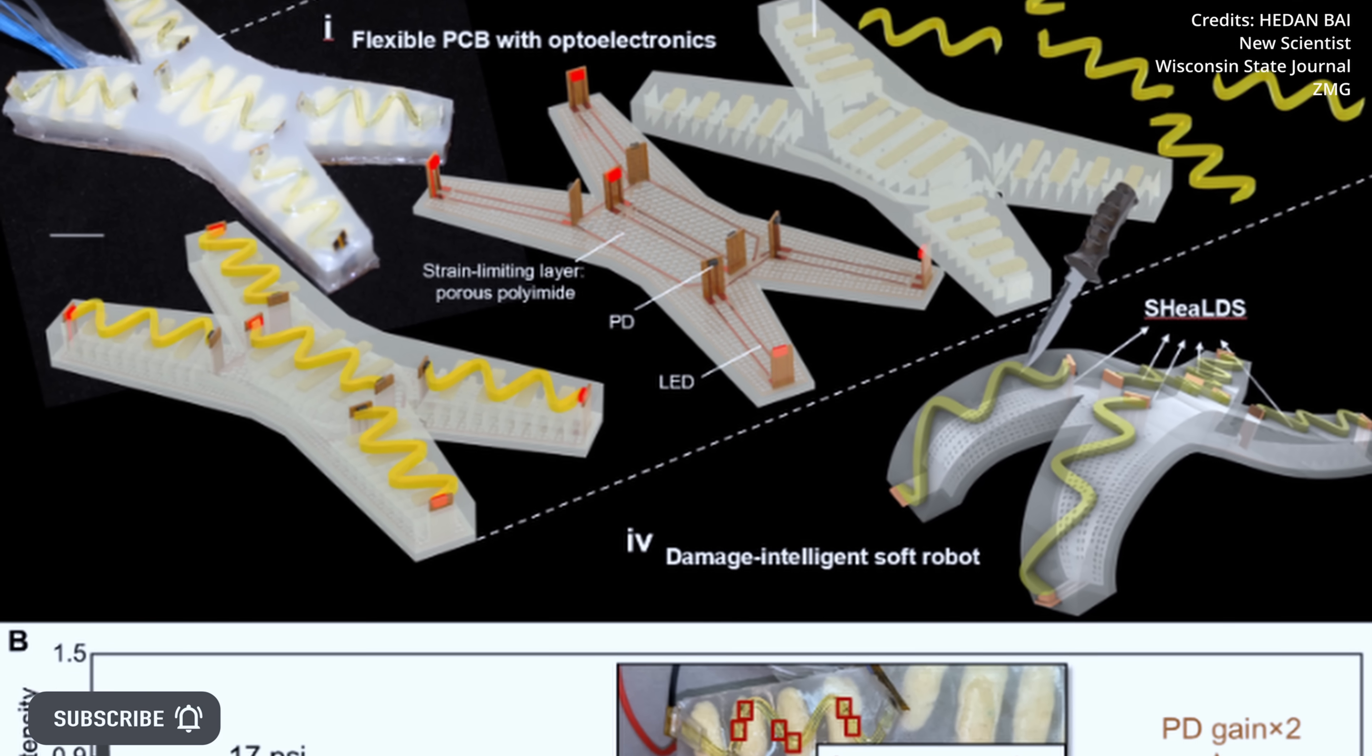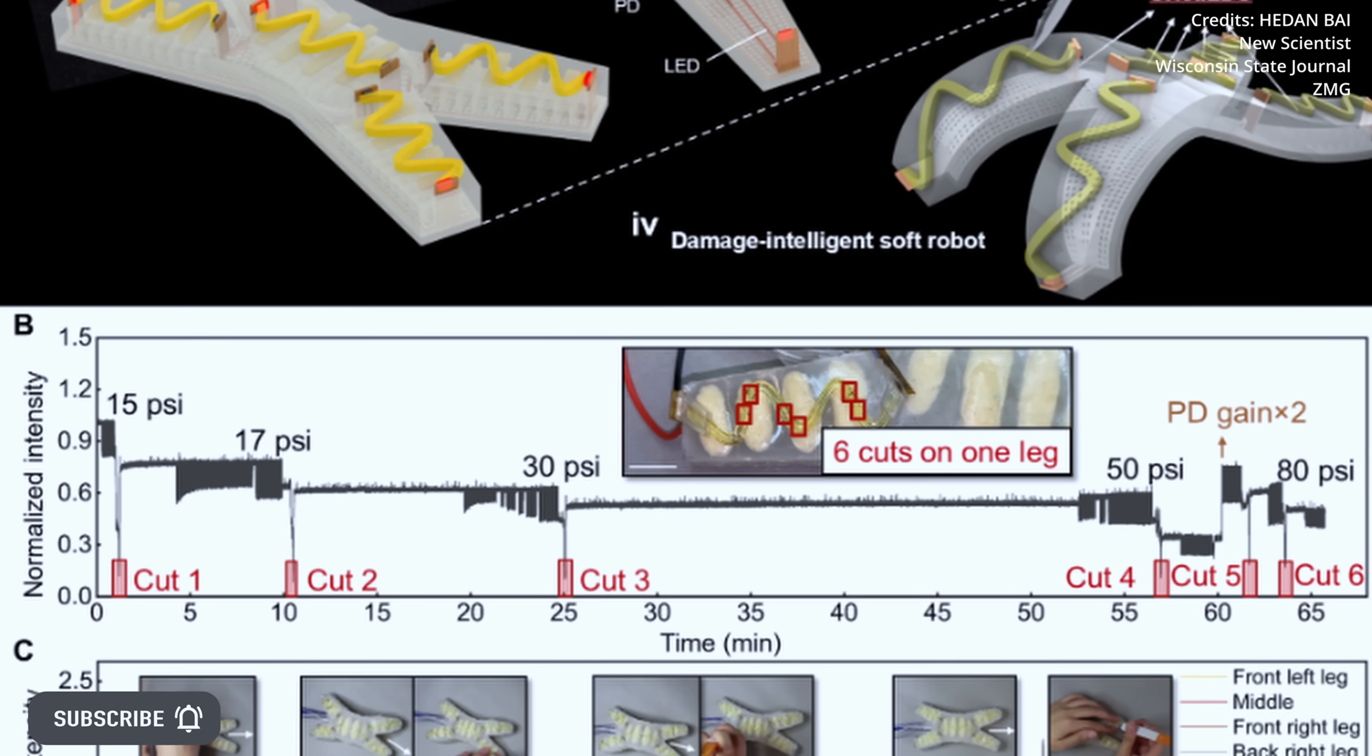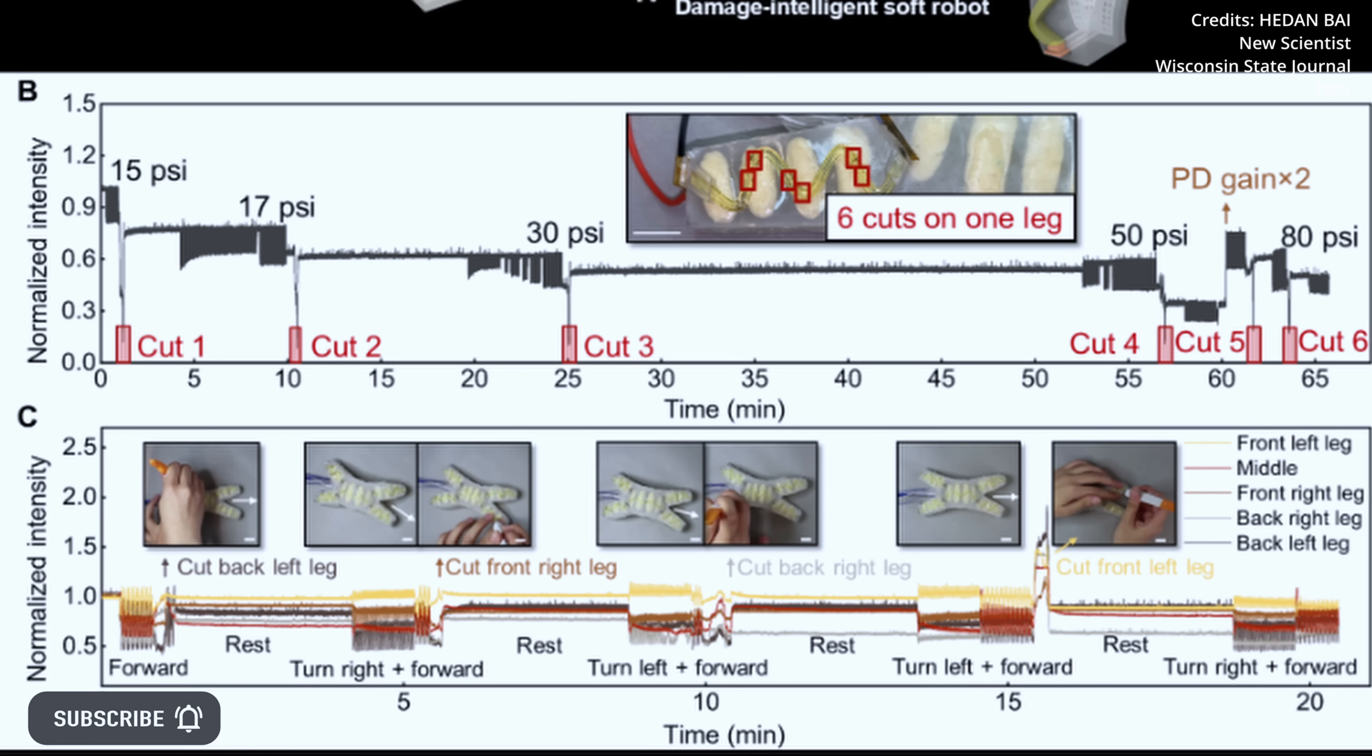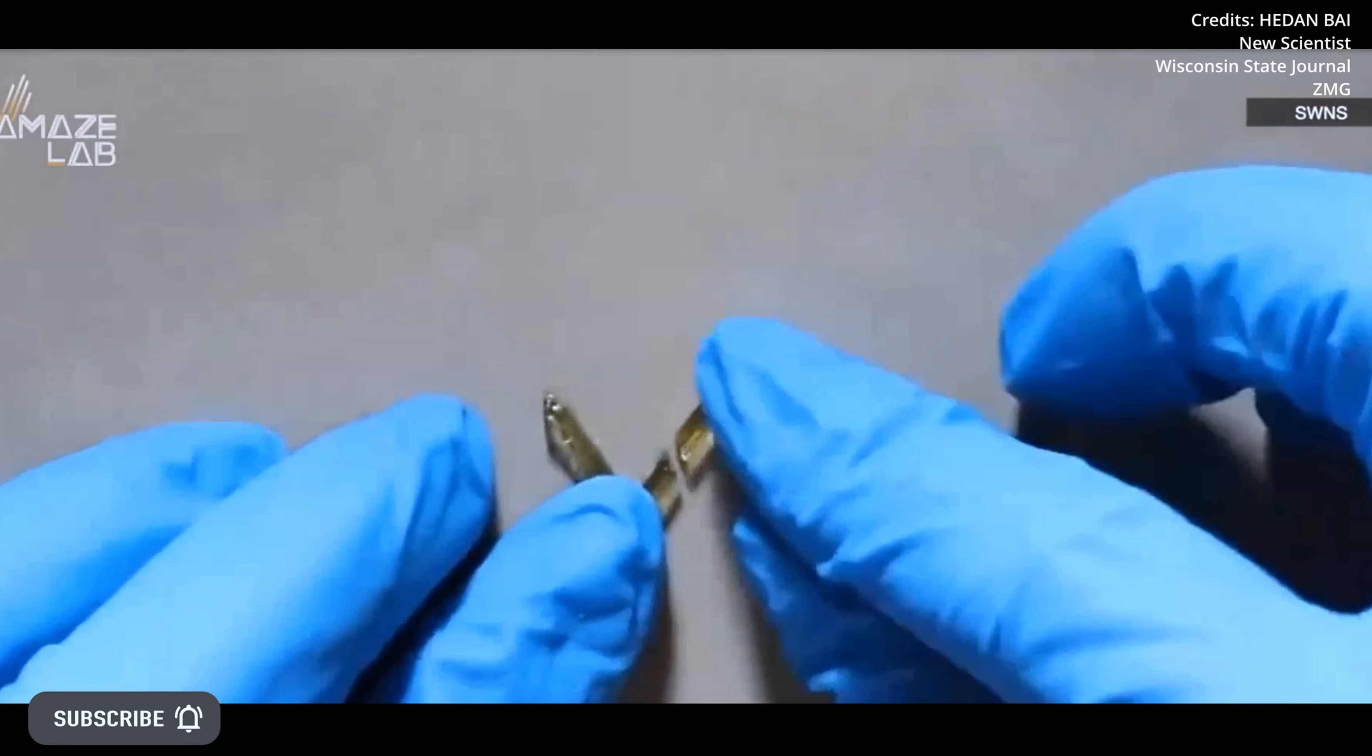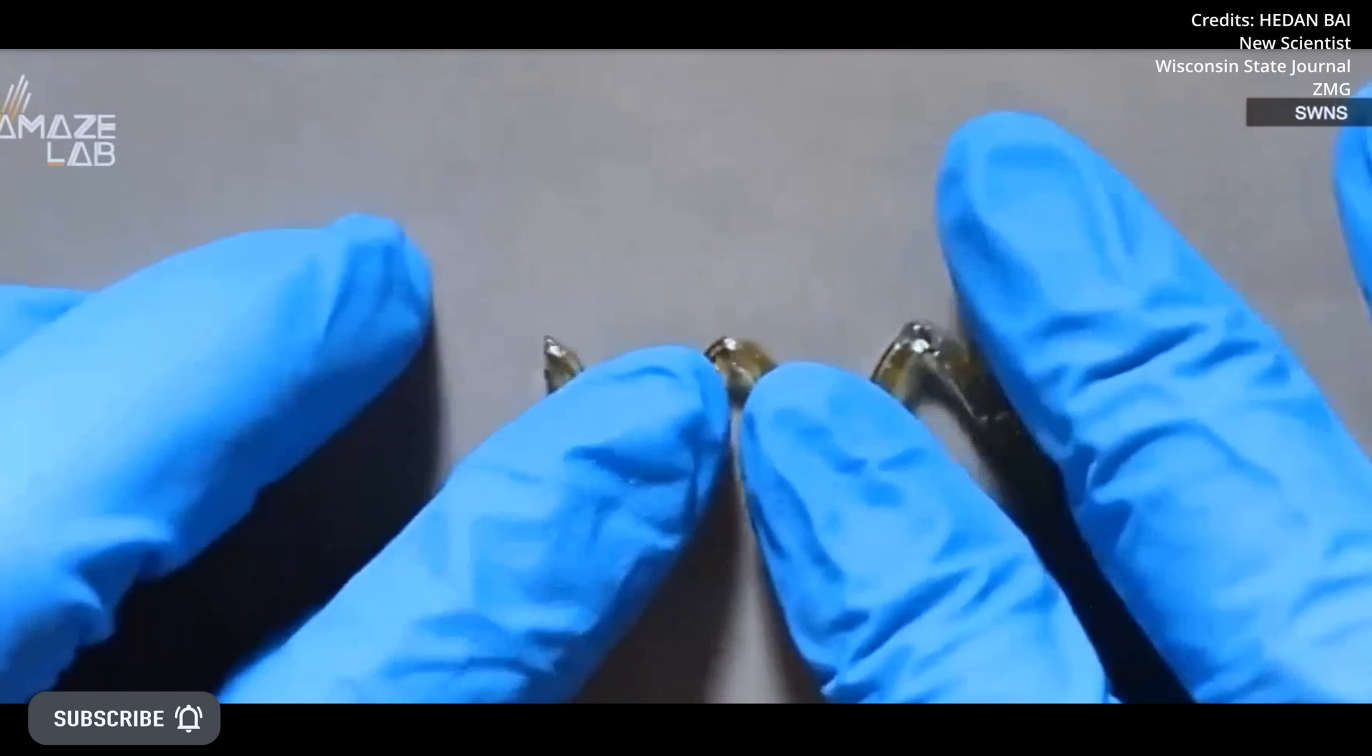When the sensor is cut, its exposed sides become chemically reactive, enabling it to repair itself and continue functioning. The researchers tested the robot's ability to detect and respond to damage by repeatedly poking a sensor on its leg. The soft robot stopped moving for about a minute after each poke to allow the sensor to heal and then resumed moving.